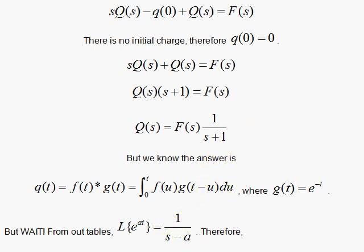And since I have a plus 1 over here, a has to be negative 1 to get that. So I have this as the Laplace transform of g of t, where I have e to the minus t. And I know that q of s, the answer is a convolution of f of t with g of t.